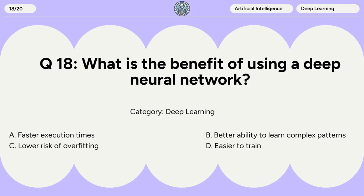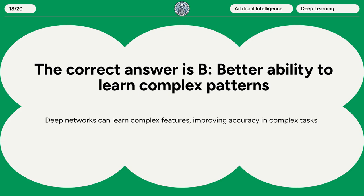Question 18. What is the benefit of using a deep neural network? A. Faster execution times. B. Better ability to learn complex patterns. C. Lower risk of overfitting. D. Easier to train. The correct answer is B: better ability to learn complex patterns. Deep networks can learn complex features, improving accuracy in complex tasks.